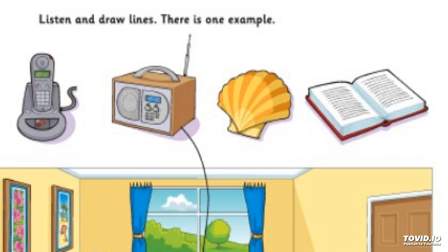Part two. Look at the picture. Listen and write a name or a number. There are two examples. Hello. Are you the girl in this picture? Yes. My name's Lucy. And how do you spell your name? L-U-C-Y. And how old are you, Lucy? I'm seven. Seven? Yes. Can you see the answers? Now you listen and write a name or a number.